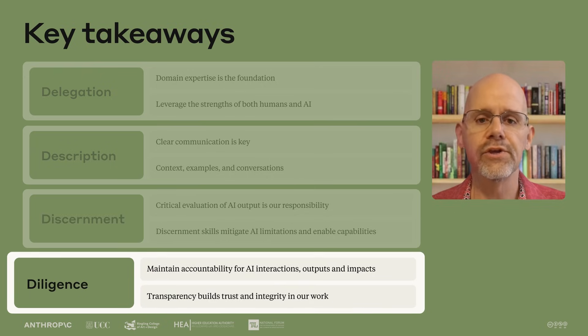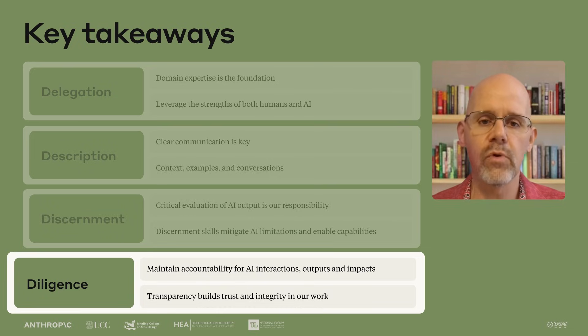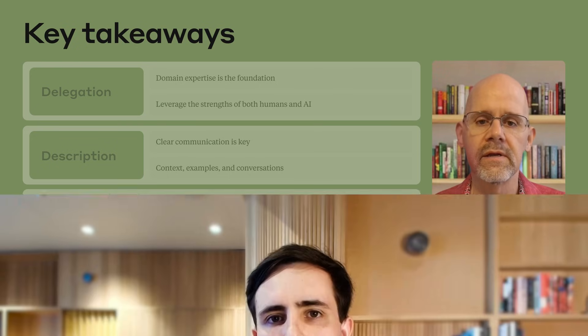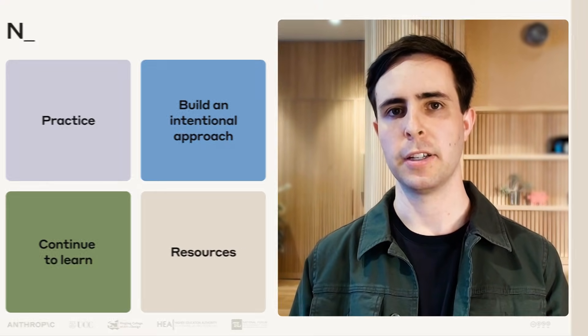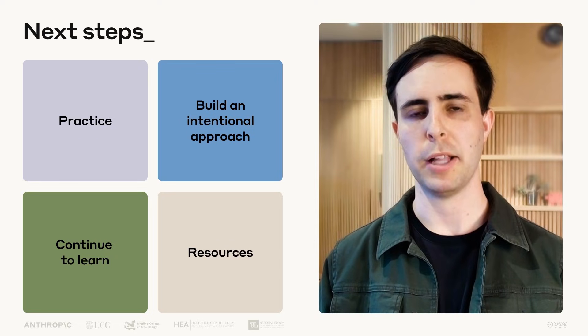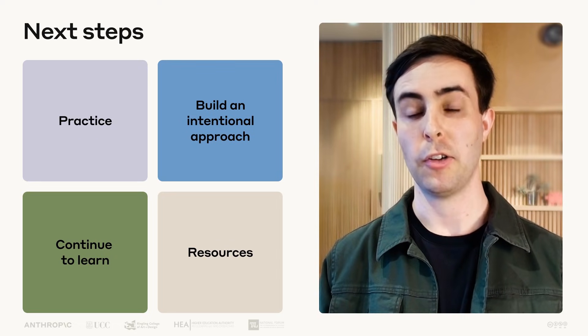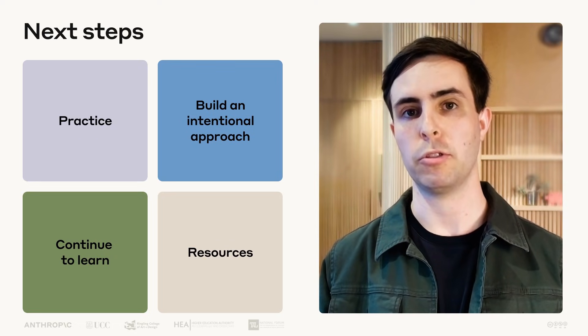For diligence, you remain accountable for what you do with AI and its impact on others. Being transparent about AI's role in your work builds trust and integrity. These competencies aren't mastered overnight — they develop through practice. As you delegate work, describe your needs, discern the quality of outputs, and apply diligence to your process, your AI fluency will grow naturally.